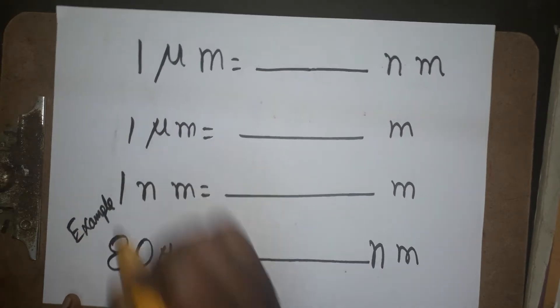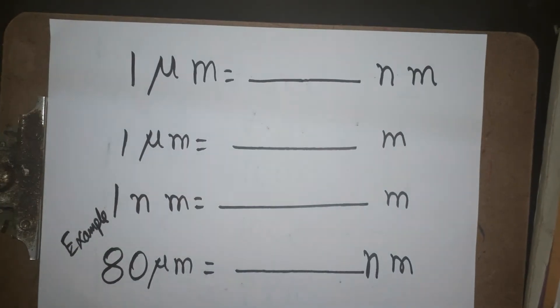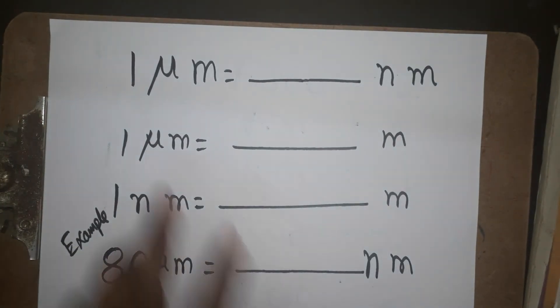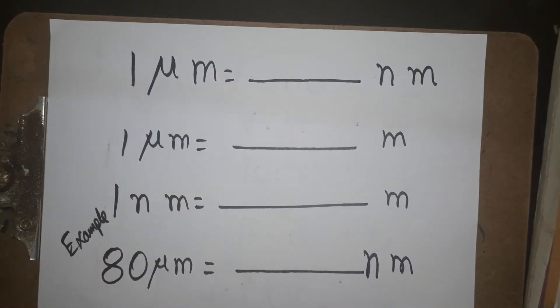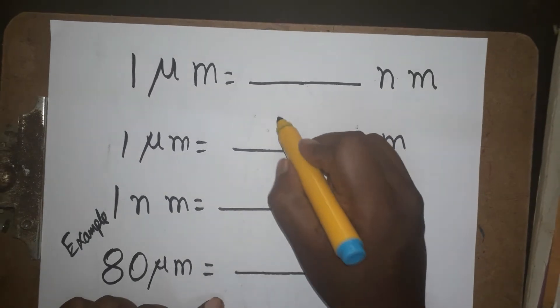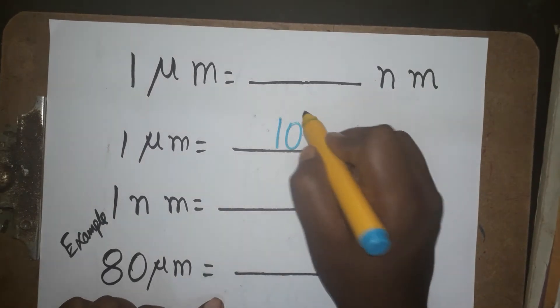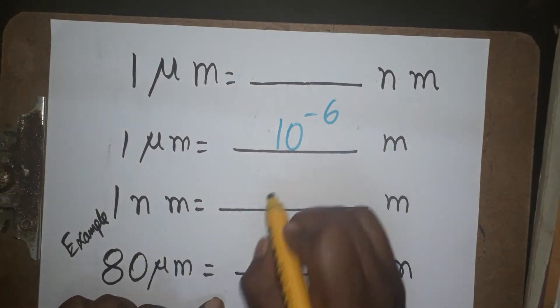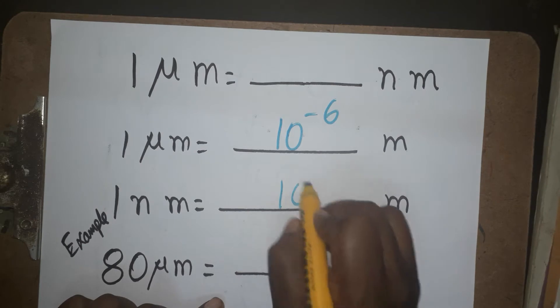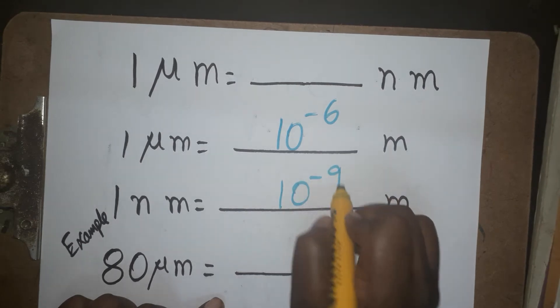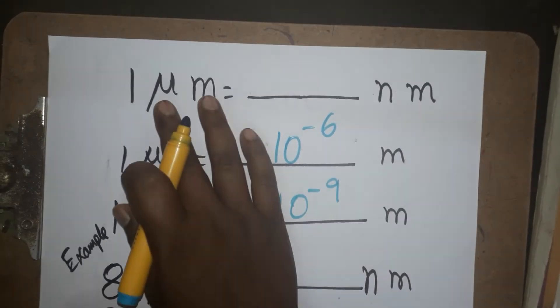First we will learn how to convert from micrometer to meter — that conversion is 10 power minus 6. Nanometer to meter is 10 power minus 9.